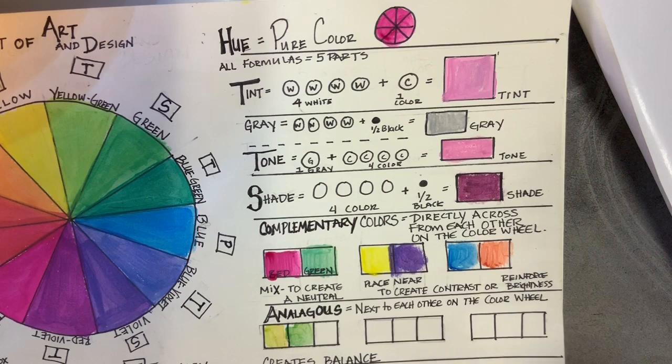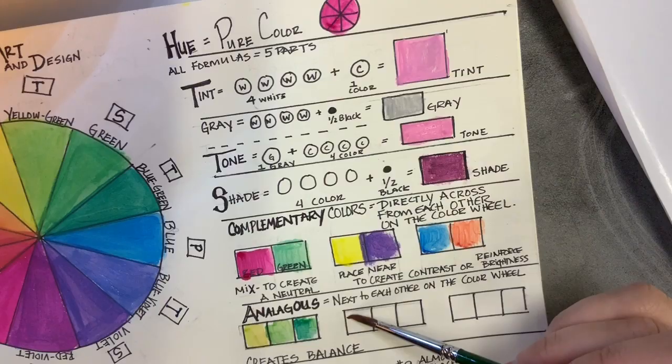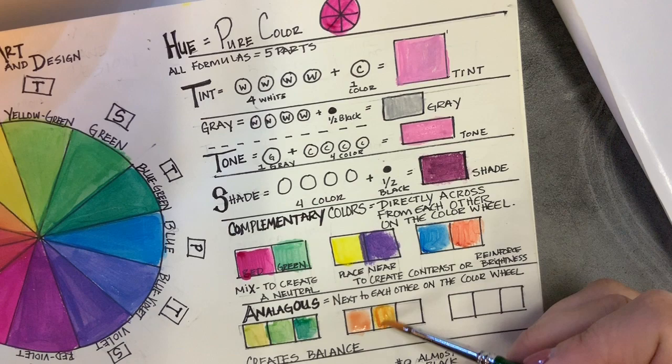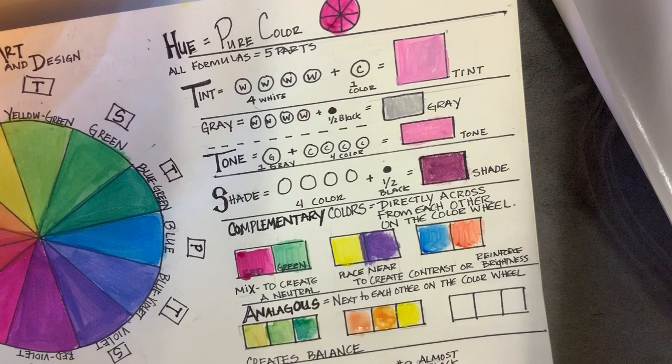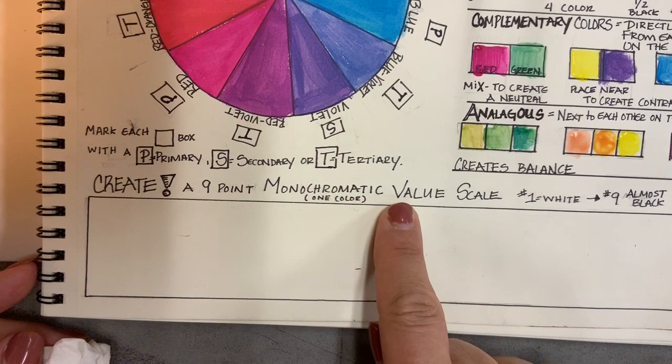Now we're going to work on analogous colors. Those are colors that are next to each other, or neighboring, on the color wheel. Artists use analogous colors to create a sense of balance and a sense of calmness. So go ahead and fill in those boxes with three colors that are neighbors of each other. So here we have red, violet, magenta, and violet.